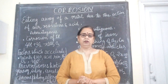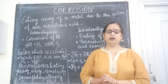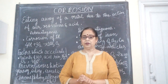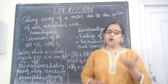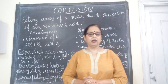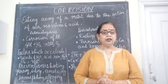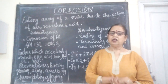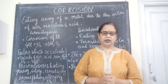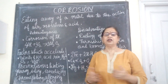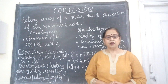Nitrogen dilutes the effect of oxygen. If there were a decrease in nitrogen and more oxygen in the atmospheric air, then the process of oxidation would be very fast, leading to a very high rate of corrosion, aging, and even a minor spark would lead to huge fires. With nitrogen present, we are protected, but even then corrosion still occurs.